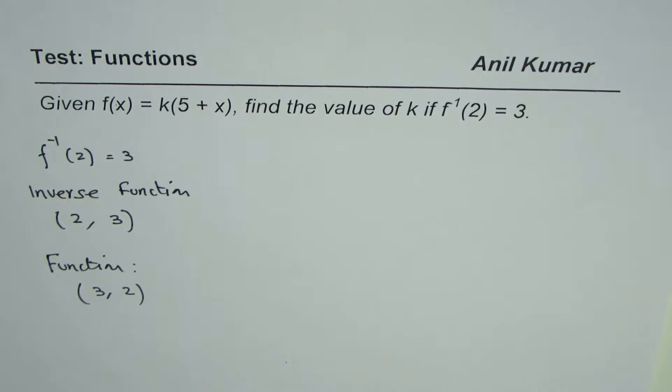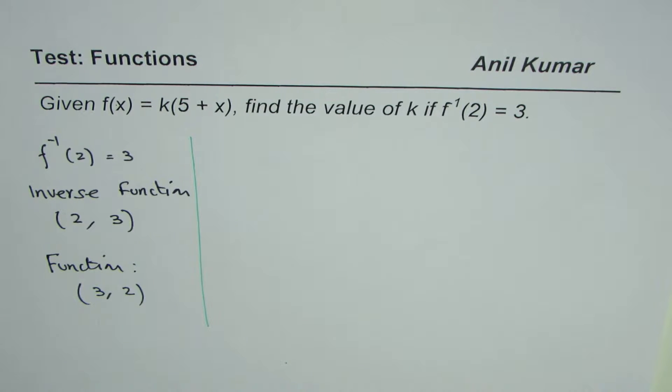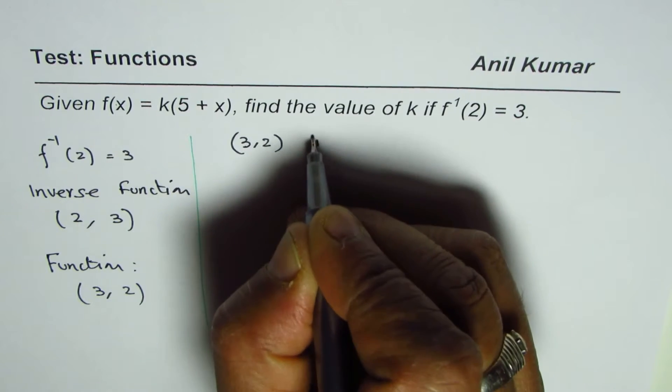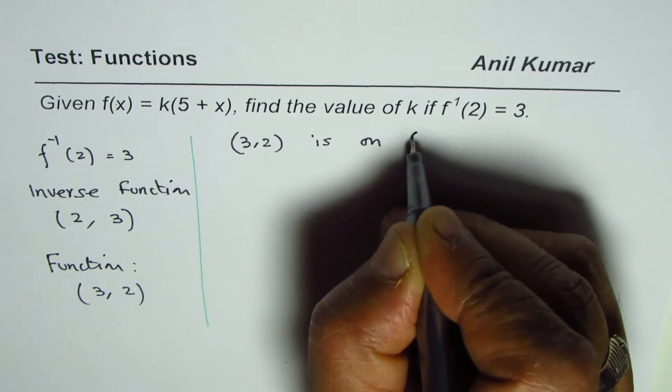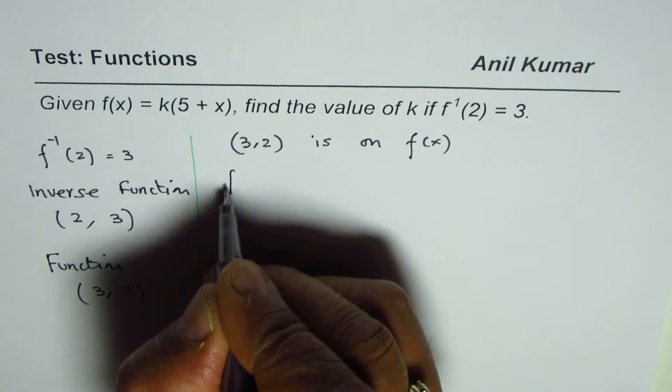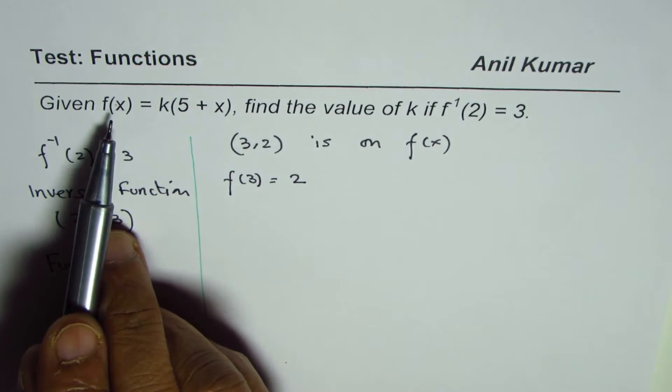So that is the concept. Now we know that the point (3, 2) lies on the function. We know that (3, 2) is on the function f(x). It really means that f(3) equals 2.